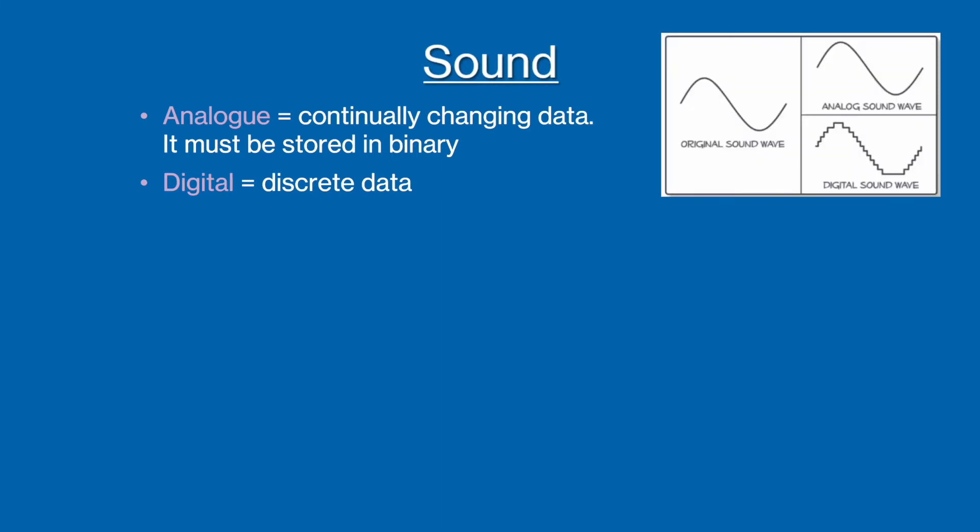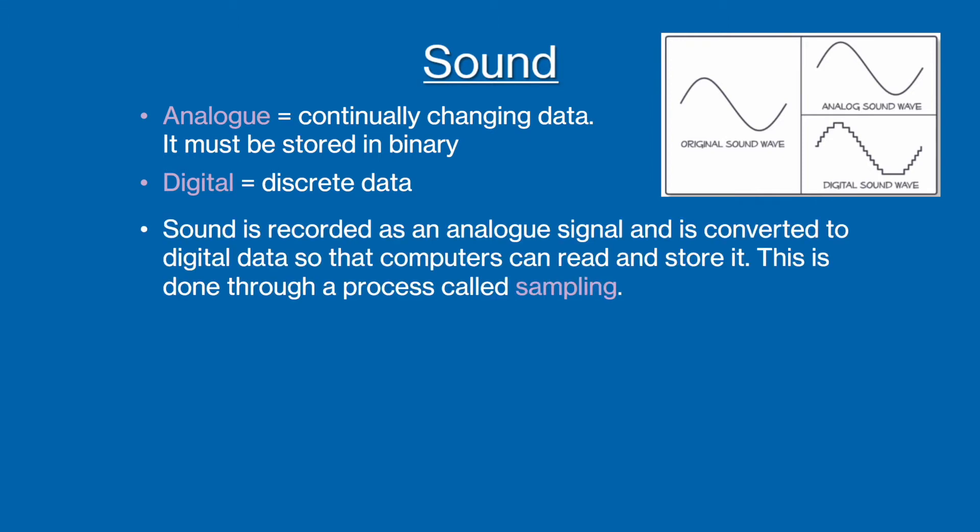You can see here how an original audio wave can be stored as both an analog wave and as a digital wave. Notice that the analog signal is smooth, whereas the digital wave is broken up. Sound is originally recorded as an analog signal. It is later converted to a digital signal so that it can be read and stored by a computer.